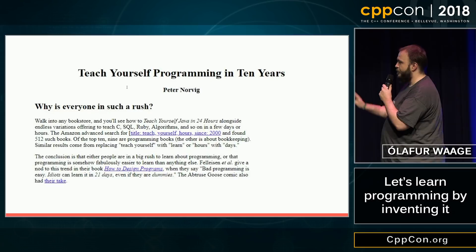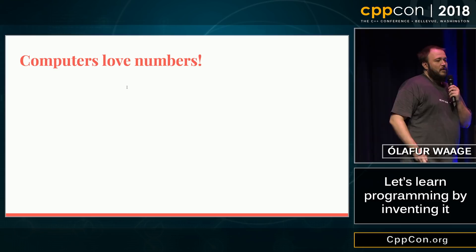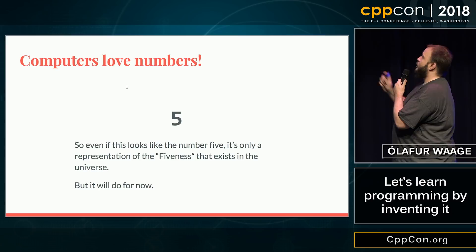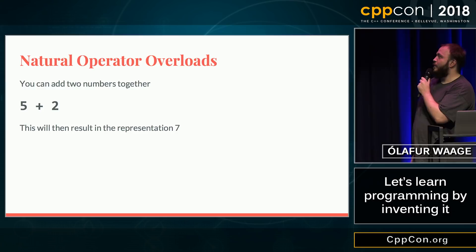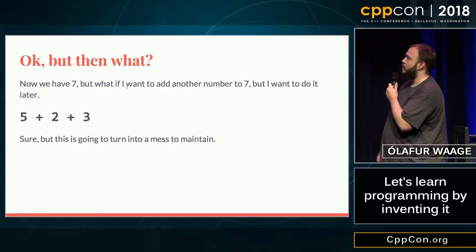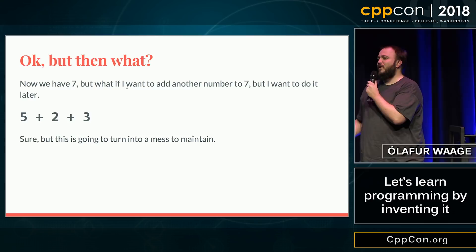So yes, computers love numbers — they're so great, here's one. Even if this looks like the number five, it's only a representation of the fiveness that exists in the universe, but it will do for now. We have natural operator overloads, so we can do five plus two — a representation of seven. But then if I have seven and I'd like to add another number to it, like three, this is going to be a mess to maintain.